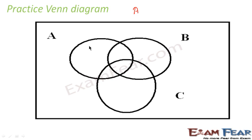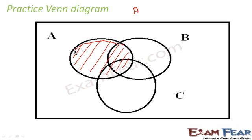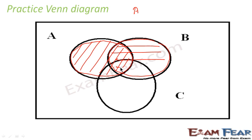Here we'll see practice. Set A is nothing but the whole range enclosed in the circle — so whatever is inside this circle is A. Similarly, for B, whatever is inside circle B is part of B. I'll create horizontal lines to represent this: whatever you have in horizontal lines is A, and this is B.